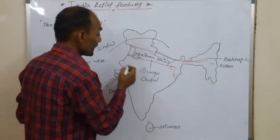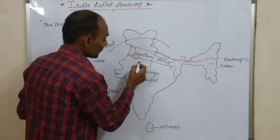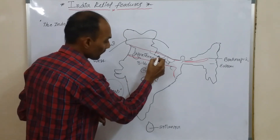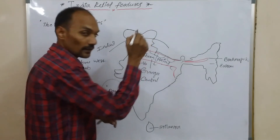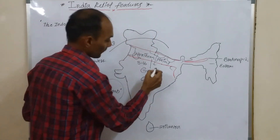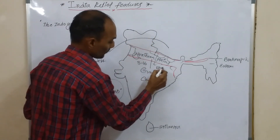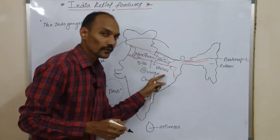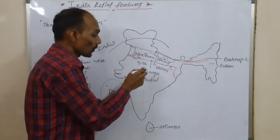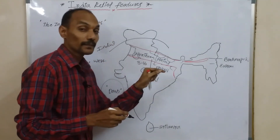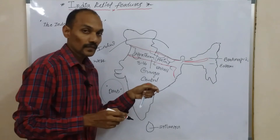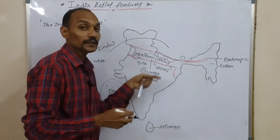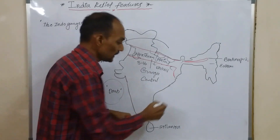The rivers deposit gravel, pebbles, and sediments in a narrow belt 8 to 16 kilometers wide at the foot of the Shivalik hills. This region is called Bhabar. Small rivers and streams flow underground through the Bhabar and then reappear in lower areas, forming swampy and marshy land called Terai.